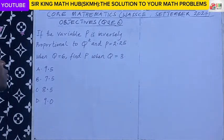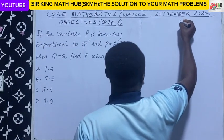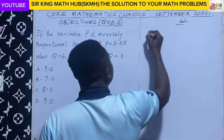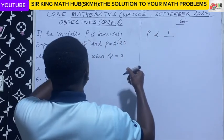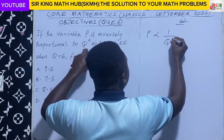If the variable p is inversely proportional to k o squared.